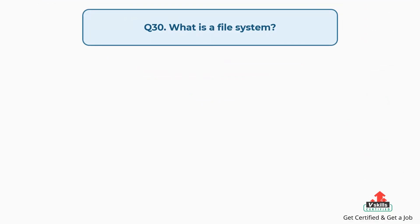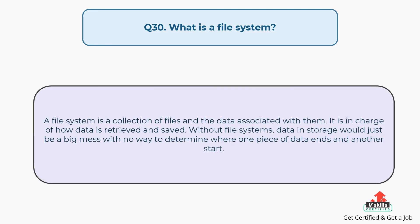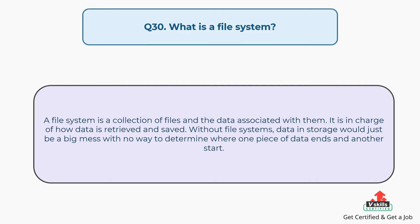Question number thirty: what is a file system? A file system is a collection of files and the data associated with them. It is in charge of how data is retrieved and saved. Without file systems, data in storage would just be a big mess with no way to determine where one piece of data ends and another starts.